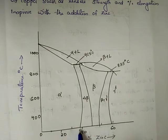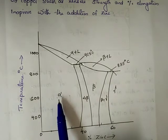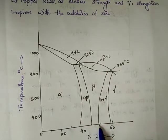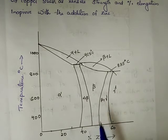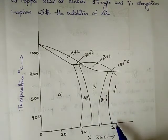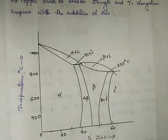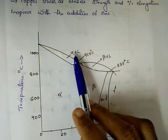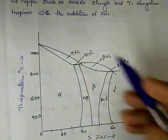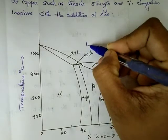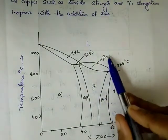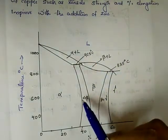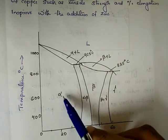In this percentage range, we have solid phases. We have a solid phase called the beta phase, then a solid phase called the gamma phase. The other regions include the alpha plus liquid region, then the beta plus liquid region, and the alpha plus beta region.